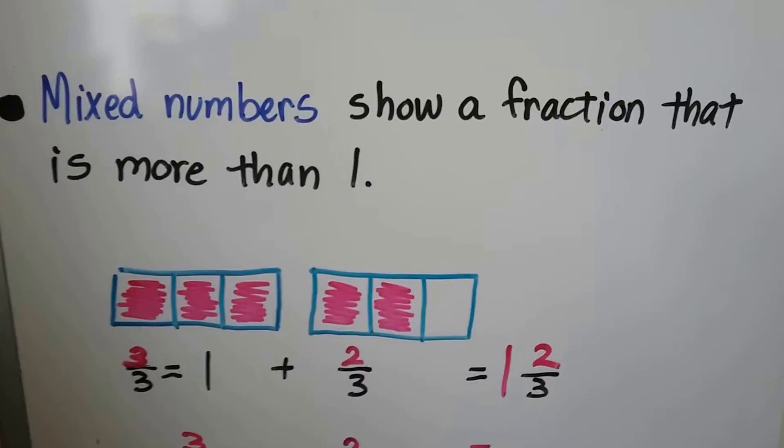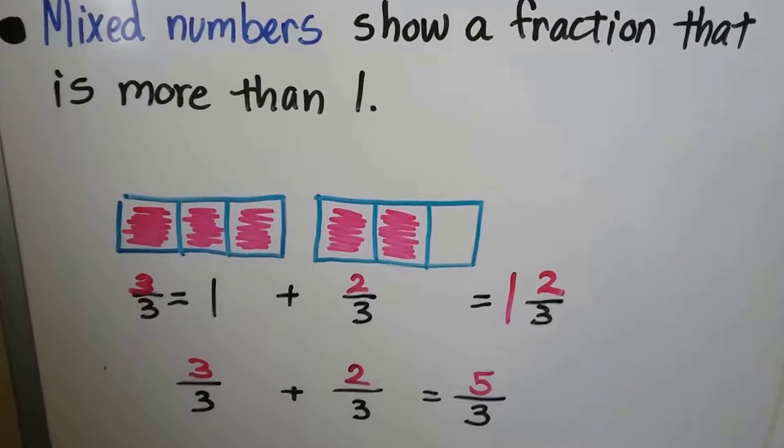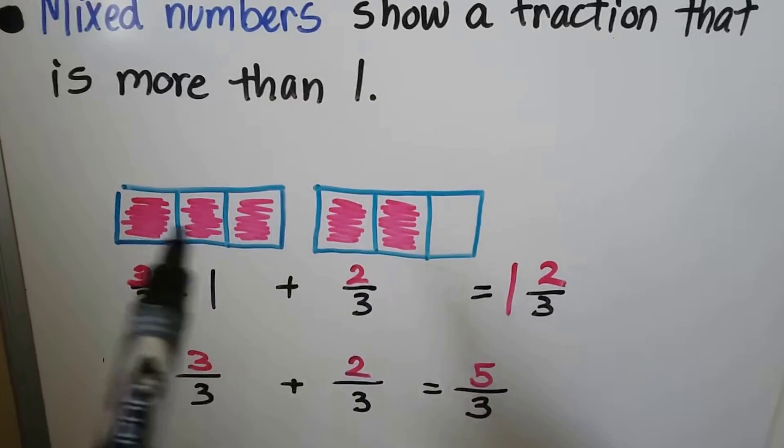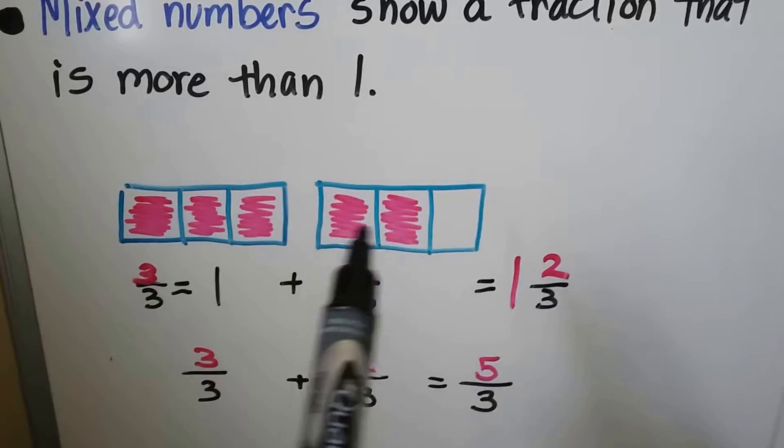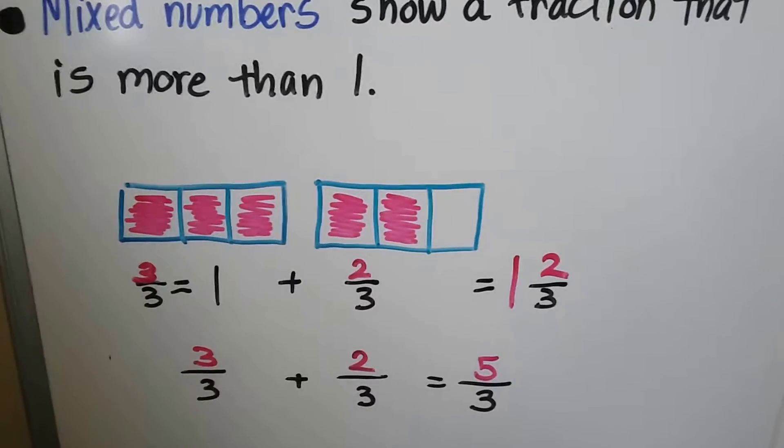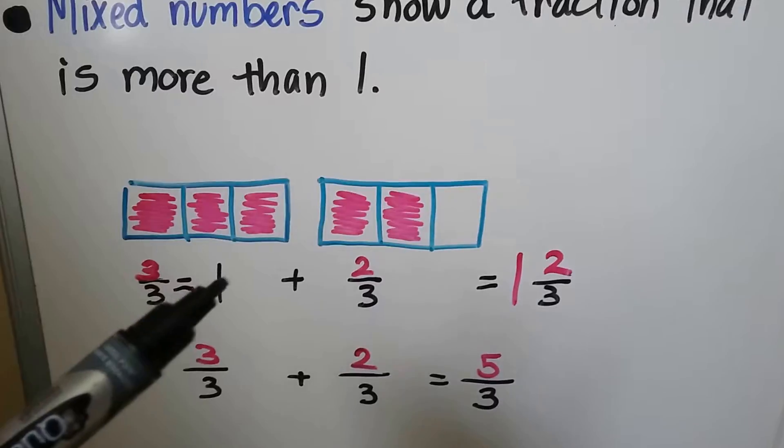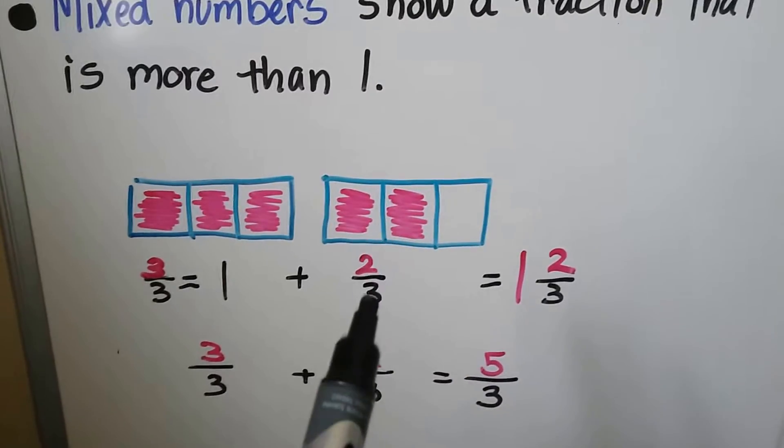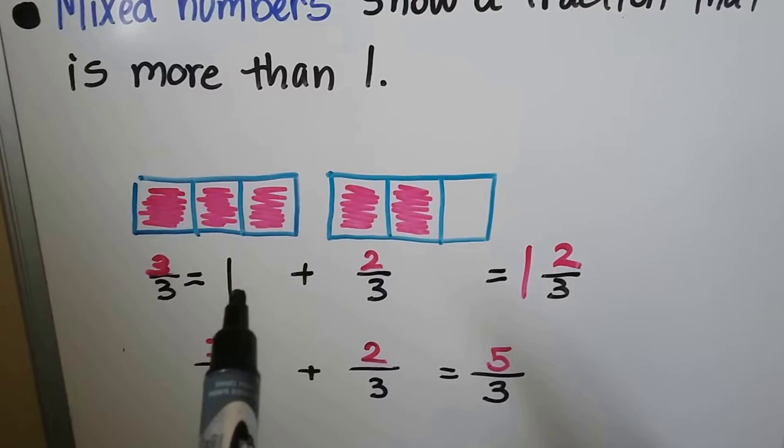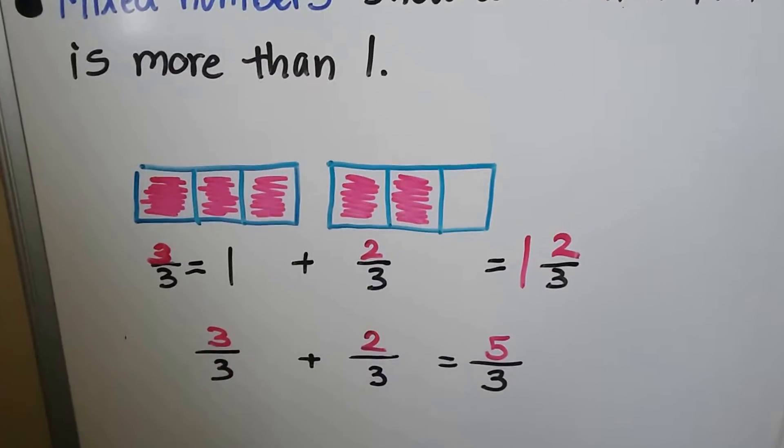Mixed numbers show a fraction that is more than one. We have this rectangle split into three equal parts and this rectangle split into three equal parts. We have 3 thirds that are shaded, so the whole thing is shaded. We have one whole. We have 2 thirds that are shaded. The one whole plus the 2 thirds is 1 and 2 thirds.